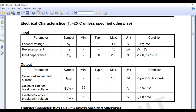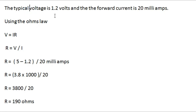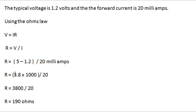We are going to control this optocoupler using Arduino UNO, which provides 5 volts on any pin when turned on. This 5 volts can damage the infrared LED, so we need a current-limiting resistor in series with the LED. From the datasheet, the typical voltage is 1.2 volts and forward current is 20 milliamps. Using Ohm's Law: R = V / I = (5 - 1.2) / 20mA = 190 ohms. The nearest standard value is 220 ohms, but I'm using a 330 ohm resistor.